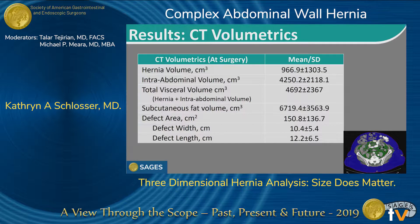We then performed CT volumetric analysis. Mean hernia volume was 1 liter, intra-abdominal volume 4 liters, and subcutaneous fat volume almost 7 liters. Mean defect area was 150 centimeters squared in this cohort.